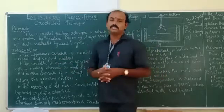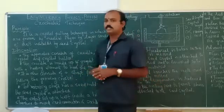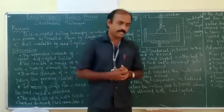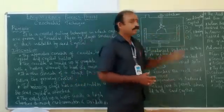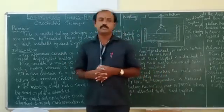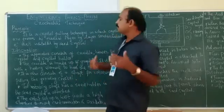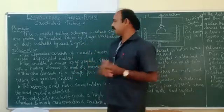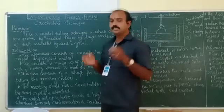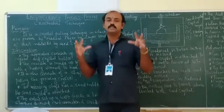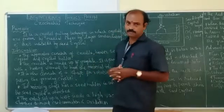Now about the construction. The apparatus consists of a crucible — the same way as the previous method, but here the crucible is somewhat larger in size, cylindrical, and whose lower portion is tapered. The crucible, crucible heater, seed crystal, and crystal holder are the important parts needed in this particular technique.